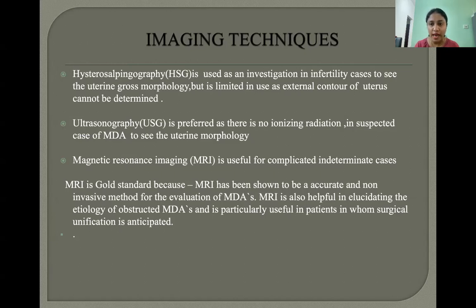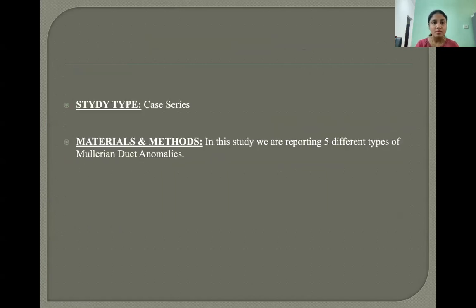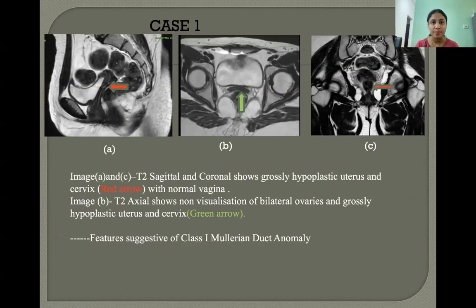MRI is also helpful in elucidating the etiology of obstructed Mullerian duct anomalies and is particularly useful in patients in whom surgical unification is anticipated. This study is a case series reporting 5 different types of Mullerian duct anomalies.